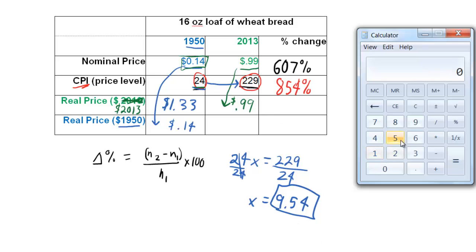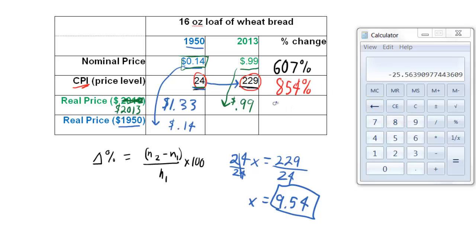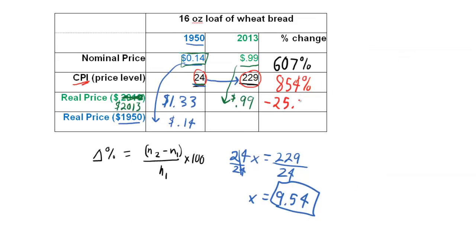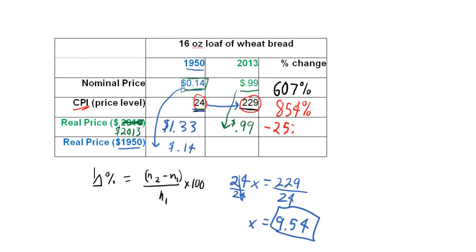How much? Let's do the percent change calculation really quick. 0.99 minus 1.33. Negative 34 cents. Yes, it's a negative number. Divide that by the initial amount, 1.33. Minus 0.25. Multiply it by 100. Minus 25.56%. Round that up. Let's say minus 25.6%.